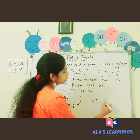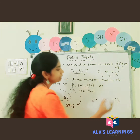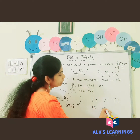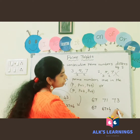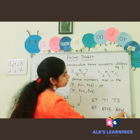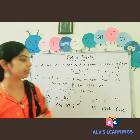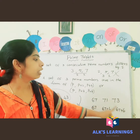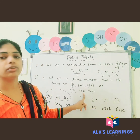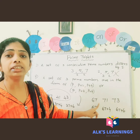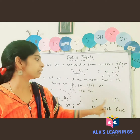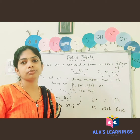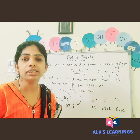Let's take one more example: sixty-seven, seventy-one, and seventy-three. Sixty-seven plus four is seventy-one, and sixty-seven plus six is seventy-three. So it satisfies the condition P, P+4, P+6. Therefore, sixty-seven, seventy-one, seventy-three are also called prime triplets. Hope you understand very well, children.